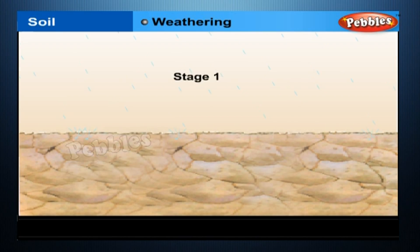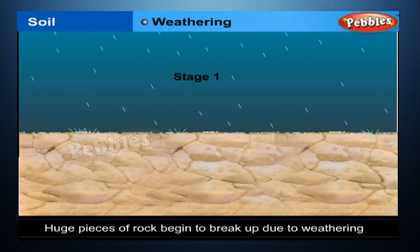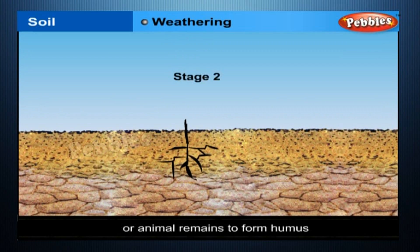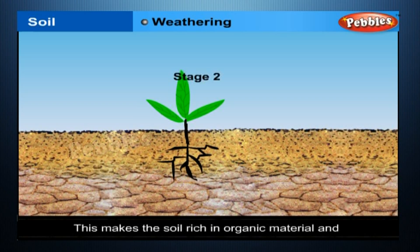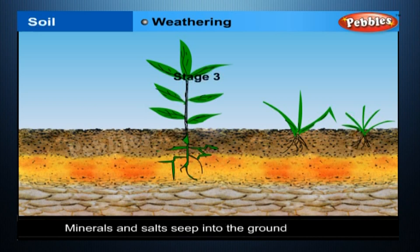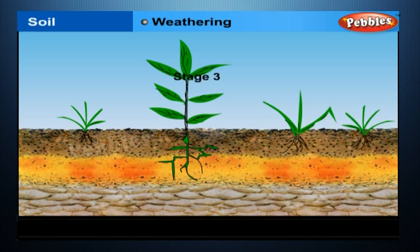The process of weathering can be divided into three stages. Stage 1: Huge pieces of rock begin to break up near the surface due to weathering, which can be physical or chemical. Stage 2: Bacteria and other microorganisms break down plant or animal remains to form humus. This makes the soil rich in organic material and in several minerals vital to plant growth. The presence of humus makes the uppermost layer of soil very fertile. Stage 3: Minerals and salts seep into the ground along with water to complete the formation of soil and make it favorable for plant growth.